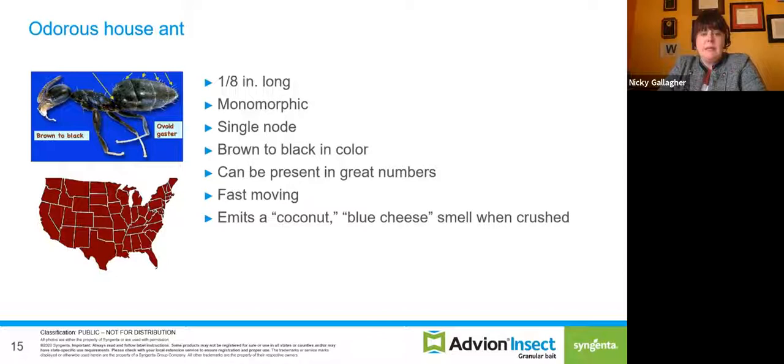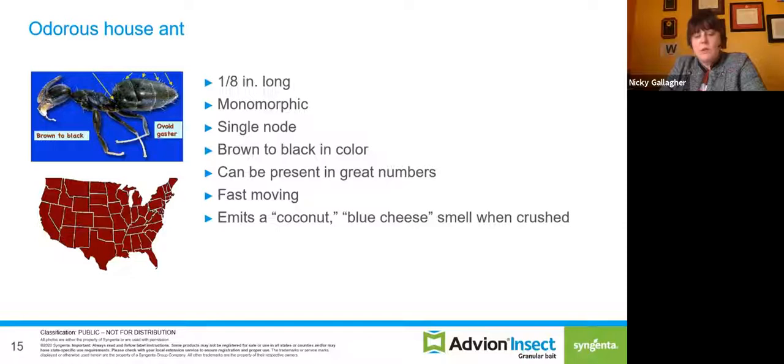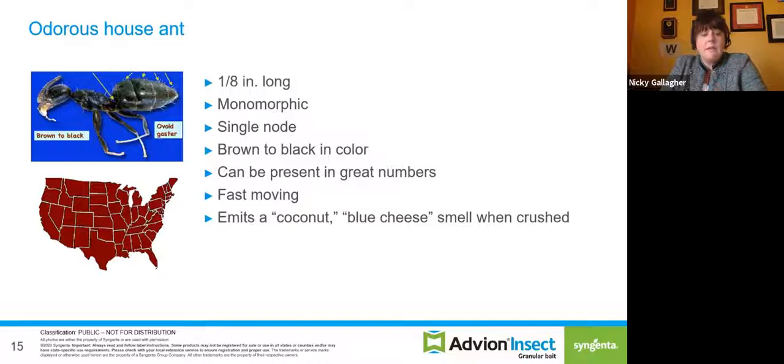Another helpful identification hint: if you crush this ant, it has that distinct odor. Some people say rotten coconut; most often we get a blue cheese smell. This is a native ant present through every state in the U.S. and can even be found in southern Canada and into Mexico as well.